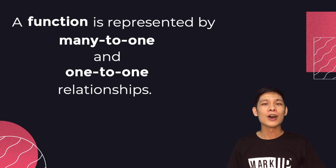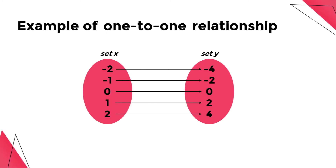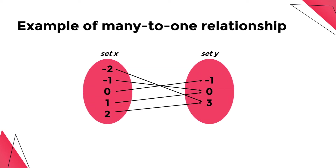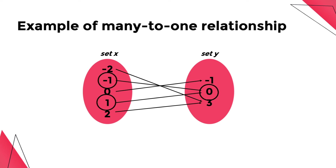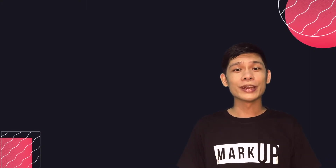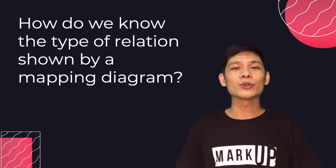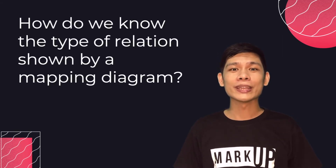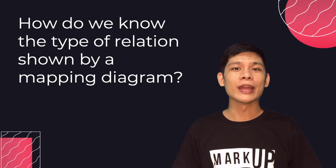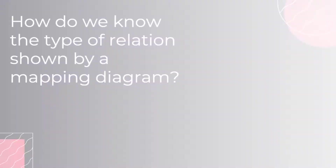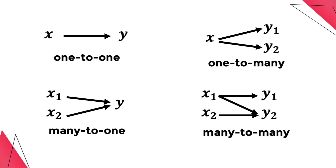Let us have some examples of one-to-one and many-to-one relations. Here's an example of a one-to-one relationship where the elements on the left side are paired exactly to one element on the right side. Here's an example of a many-to-one relationship where two elements on the left side are paired to one element on the right side, such as negative two and two paired to three, and negative one and one paired to zero. Now let's look at the mapping diagrams of one-to-one, many-to-one, one-to-many, and many-to-many correspondences.